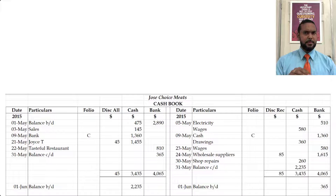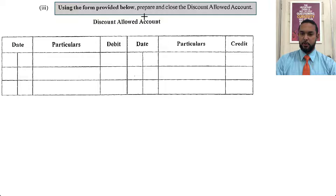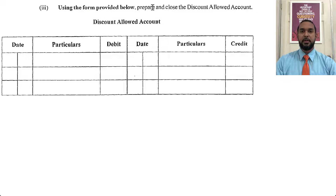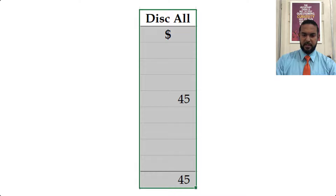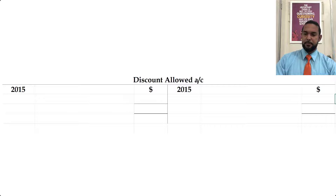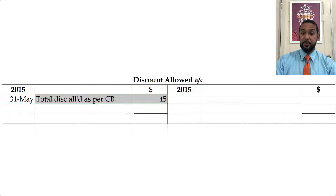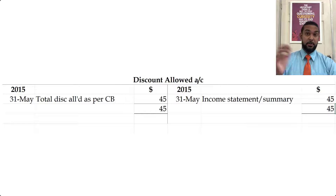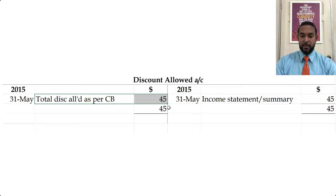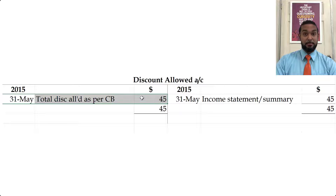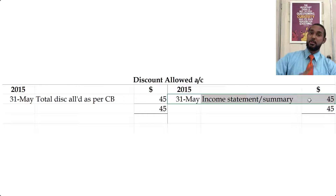We also need to prepare and close the discount allowed account. Discount allowed is an expense. In the cash book, the total for discount allowed was $45, so we enter that on the debit side — 'total discount allowed as per cash book.' To close an expense account, you transfer that amount to the income statement or income summary. To transfer it out, you go on the opposite side to where the balance currently exists. Discount allowed has a debit balance, so we credit the account to remove it and transfer it to the debit of the income statement.